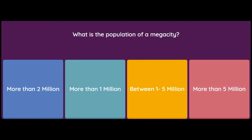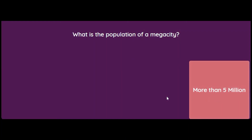What is the population of a mega city? Options: more than 2 million, more than 1 million, between 1 to 5 million, or more than 5 million. The answer is more than 5 million. Any city with a population size of more than 5 million is a mega city, while cities between 1 to 5 million are metropolises.